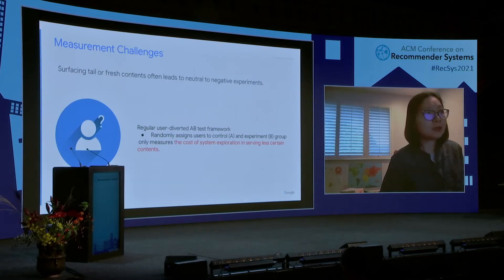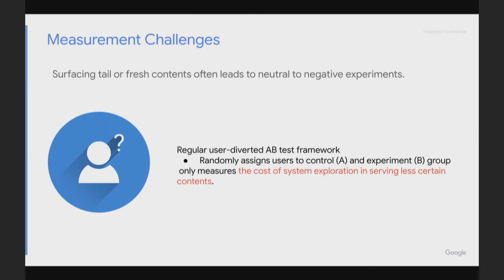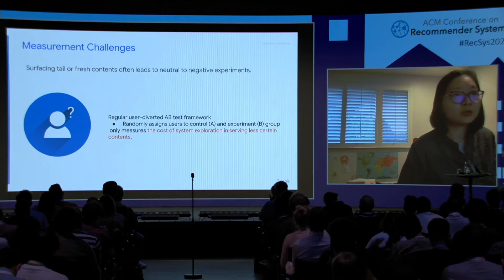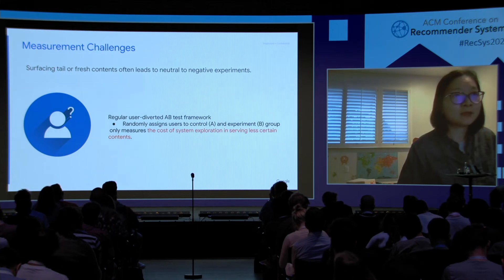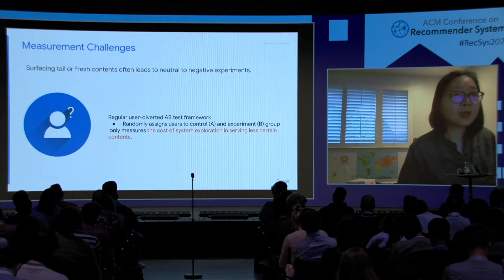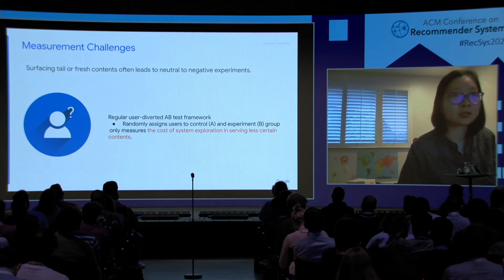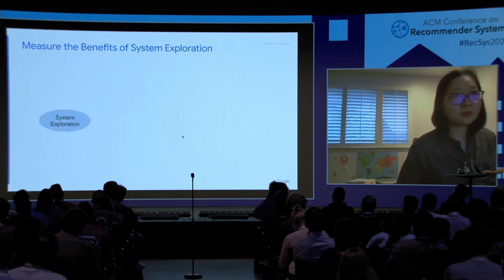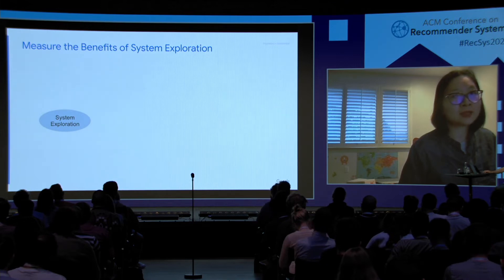On system exploration, the main challenge is on the measurement side. When people perform system exploration to surface more tail and fresh content, they often see neutral or even negative experimental results. We hypothesize the reason is that a regular user-diverted A/B test — which randomly assigns users to a control and experiment group and compares performance between the two — can only measure the cost of system exploration in serving less certain content, but cannot capture its other indirect effects.